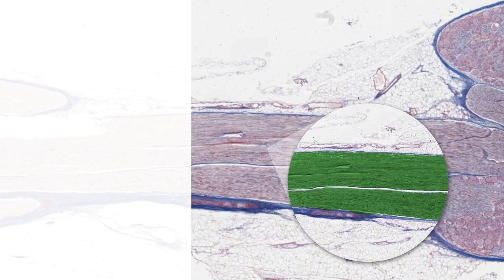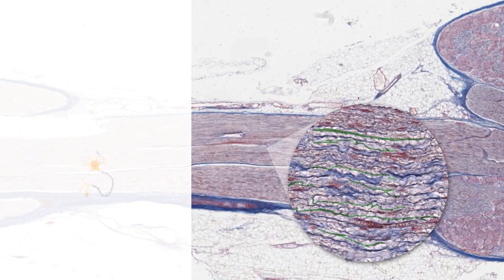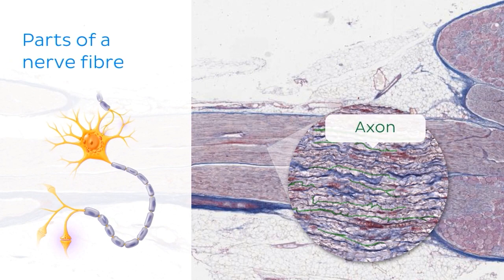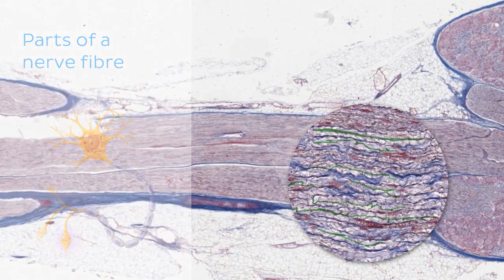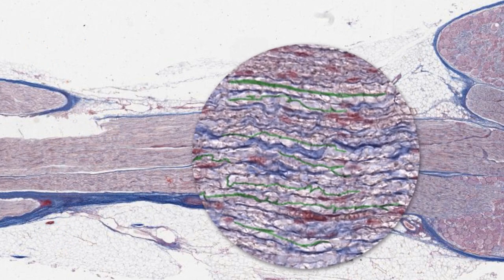So, let's up the magnification a little bit further. And, by doing this, we can see each axon running through the centre of each nerve fibre. The axon is like an arm that carries the nerve impulse. On histology, it can be pretty difficult to see each individual axon as they stain fairly faintly.